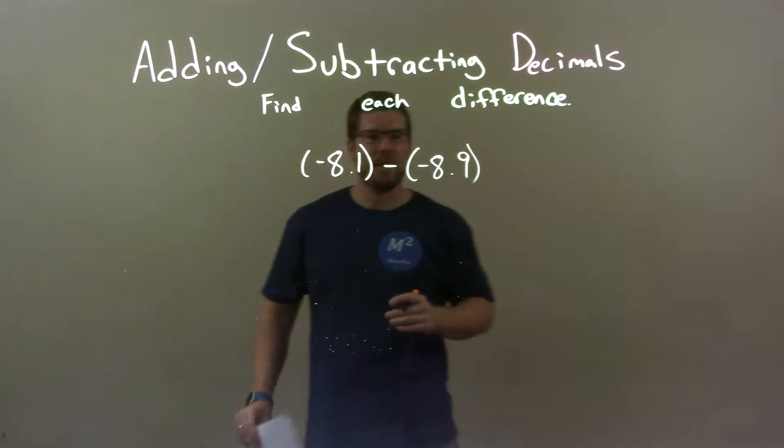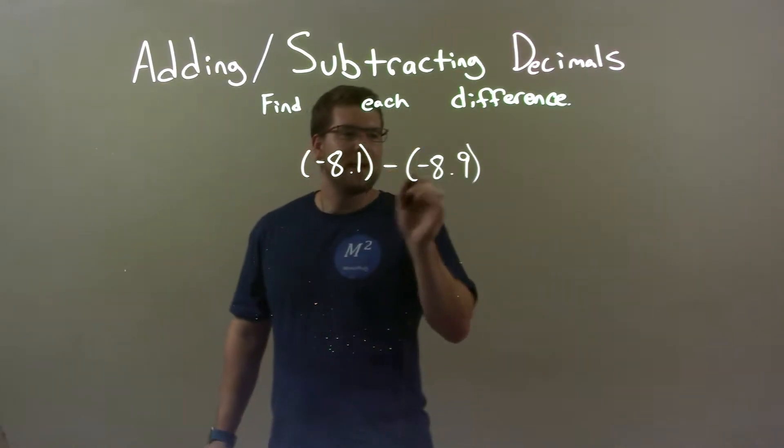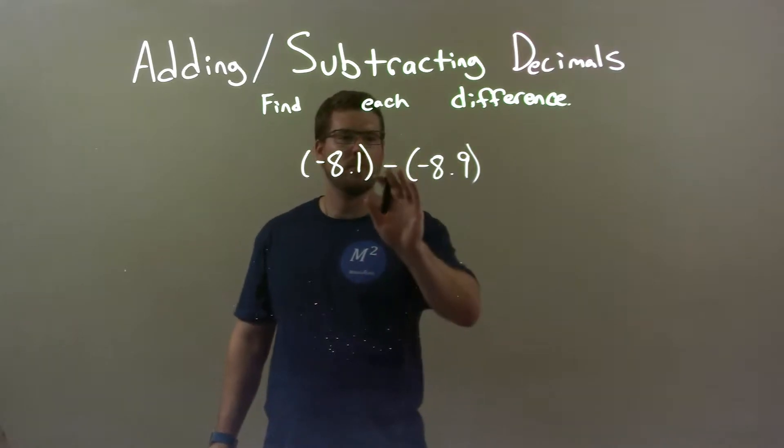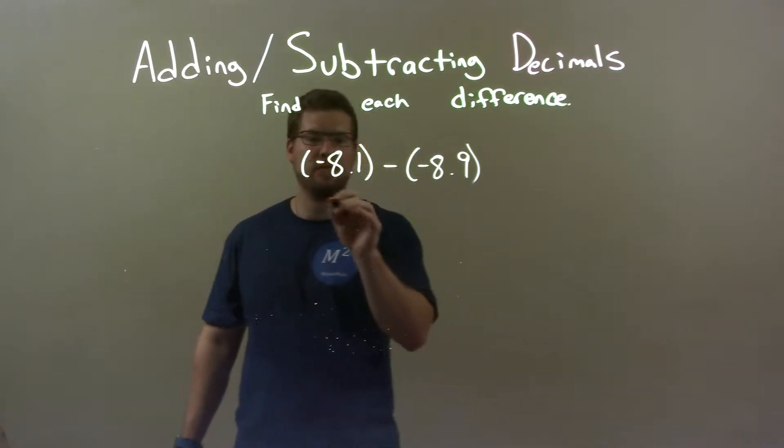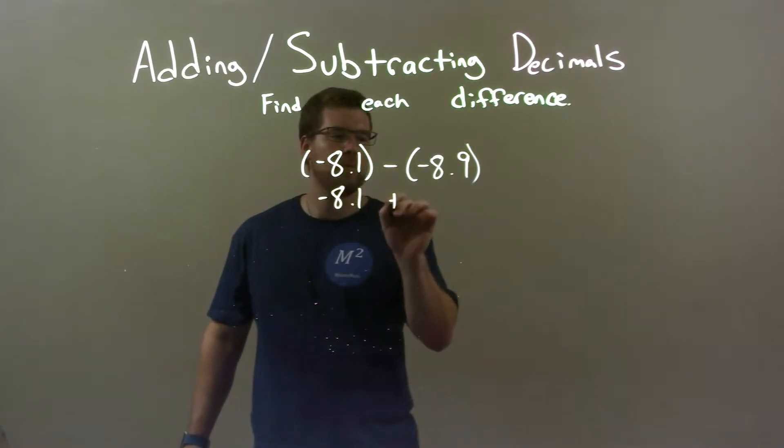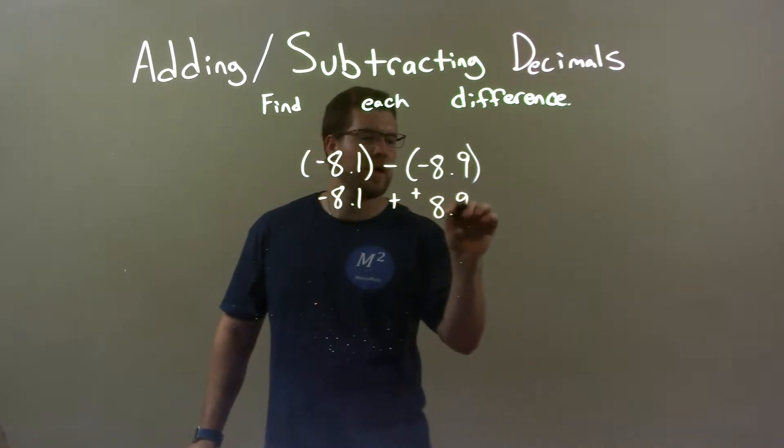Well, this one's a little tricky because we have subtracting a negative. Well, when we subtract a negative, we know we're adding a positive. So we have negative 8.1 plus a positive 8.9.